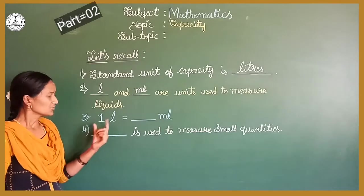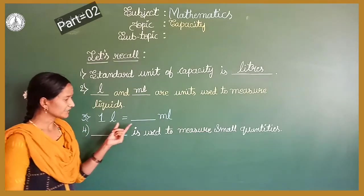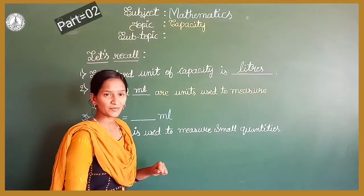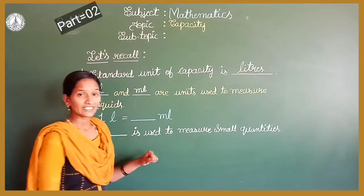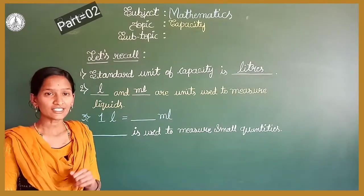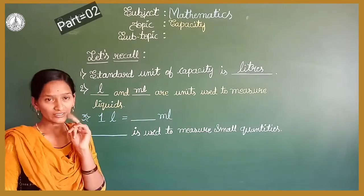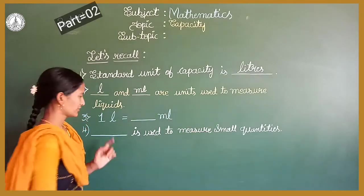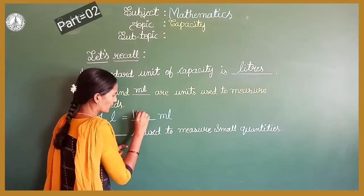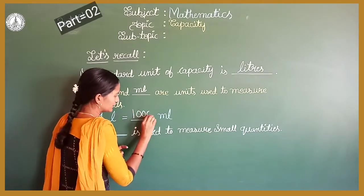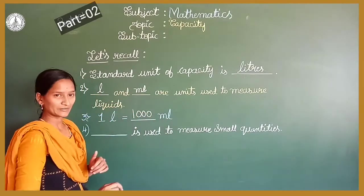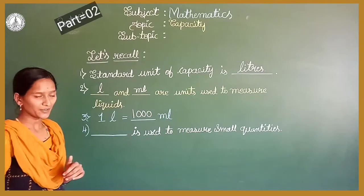Now come to the third one. One litre is equals to dash millilitre. Yesterday I told this. It is 1000. One litre is equals to 1000 millilitre.